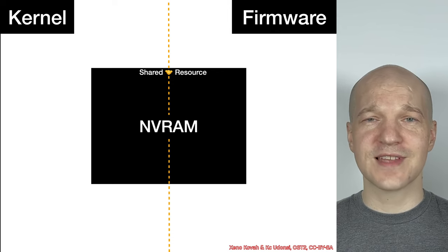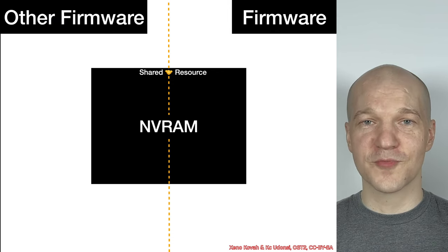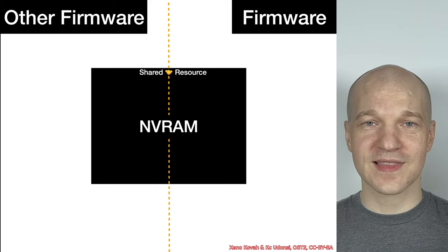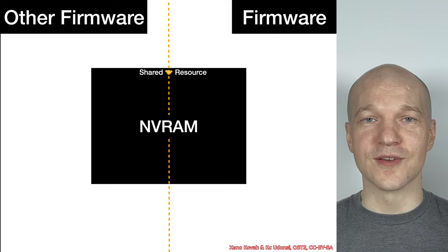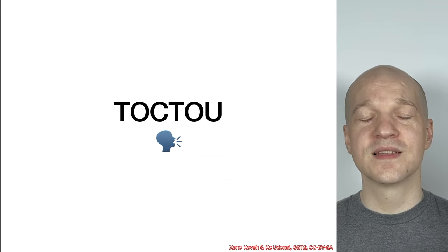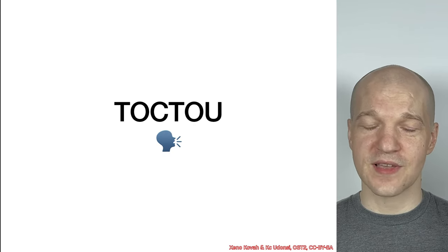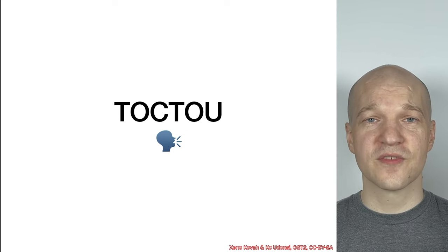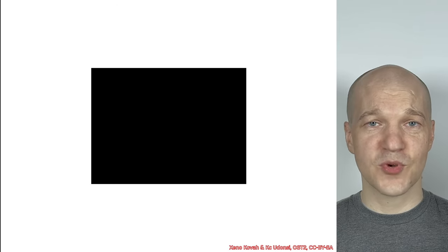It doesn't just have to be kernel and firmware — it can be firmware and firmware. Two pieces of firmware sharing the same non-volatile memory can have race conditions between them. So let's talk about those categorizations of race conditions. The first one is TOCTOU — time of check, time of use. At this point I have to warn you that if you stare long into the slides, the slides also stare into you.